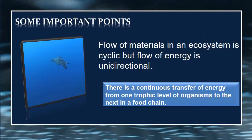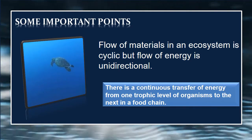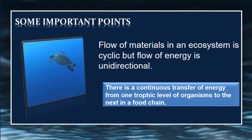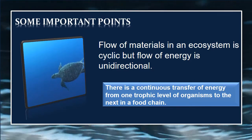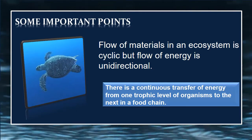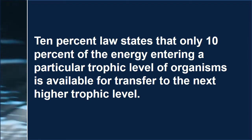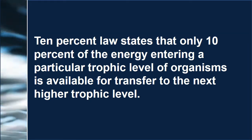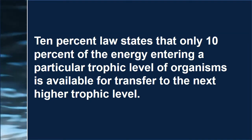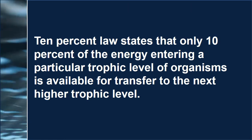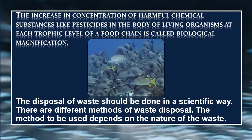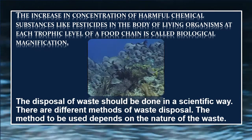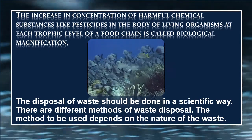Some important points: Flow of materials in an ecosystem is cyclic, but flow of energy is unidirectional. There is a continuous transfer of energy from one trophic level of organisms to the next in a food chain. The 10% law states that only 10% of the energy entering a particular trophic level of organisms is available for transfer to the next higher trophic level. The increase in concentration of harmful chemical substances like pesticides in the body of living organisms at each trophic level of a food chain is called biological magnification.